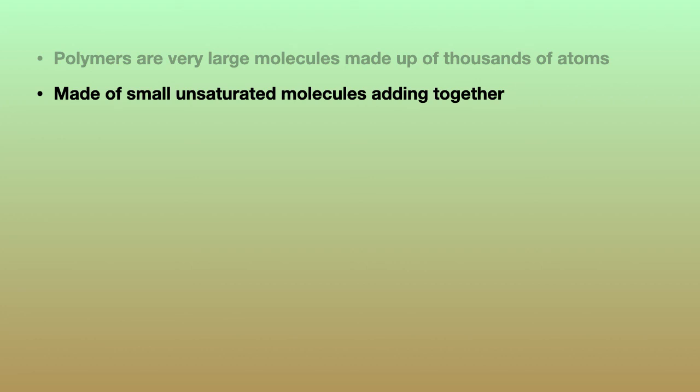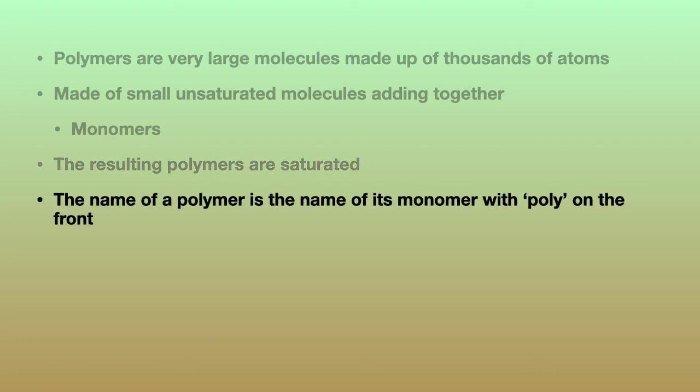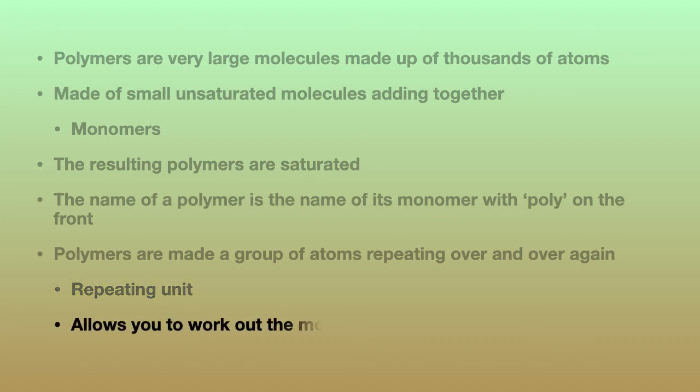So what should we now know? You should now know that polymers are very large molecules made up of thousands of atoms. But they're also made of small unsaturated molecules adding together. We call these small unsaturated molecules monomers. And when these monomers have added together to form the polymer, the polymer itself is saturated. That means no double bonds. Naming polymers is dead easy. You simply put poly on the front of the name of the monomer. And you should be aware that polymers are made of groups of atoms repeating over and over again. These are called repeating units. And if you know what the repeating unit is in a polymer, you can work out what the monomer was.